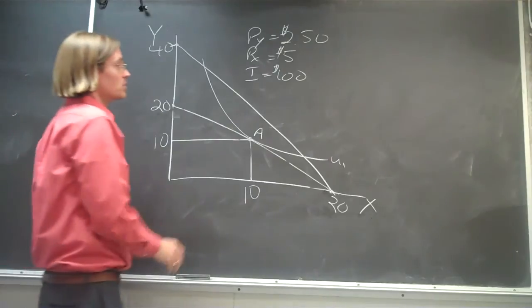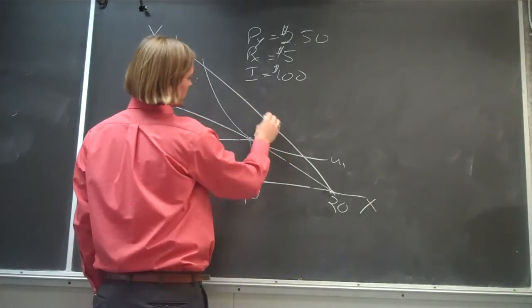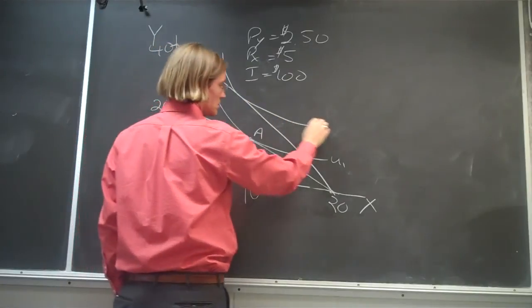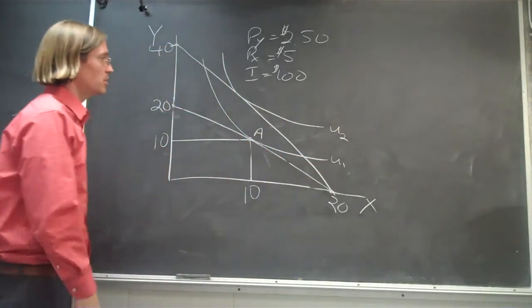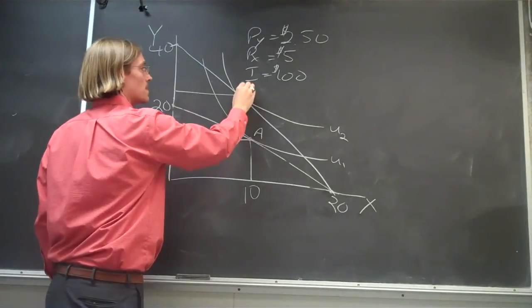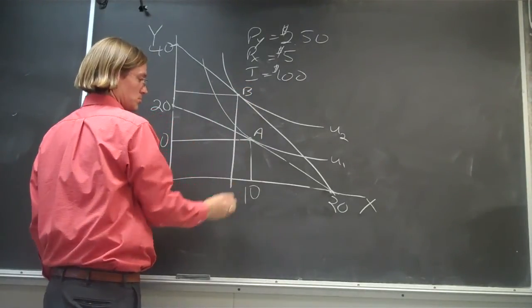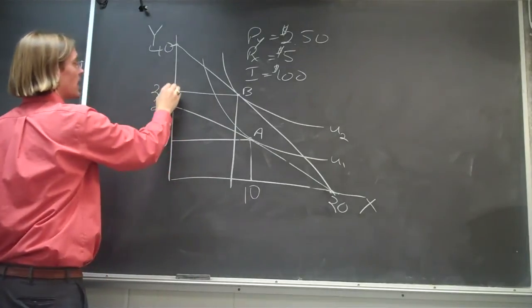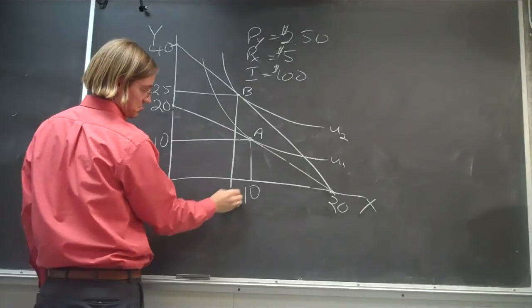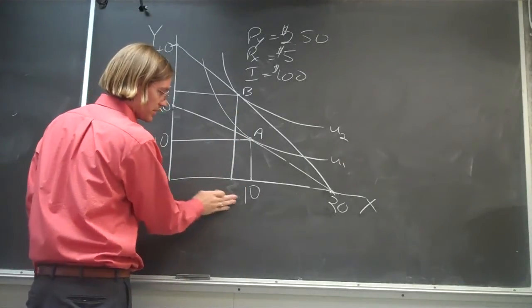Well now we can buy 40 units of good Y if we spend all of our money on good Y. And so the consumer is going to move to some higher indifference curve. Let's say it's up here, U2. They're going to be better off, and now they're going to be consuming 25 units of good Y.